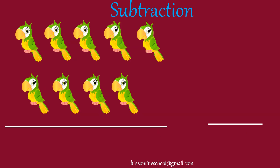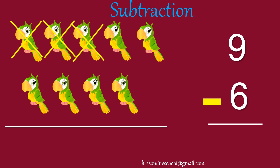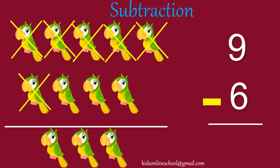And another example. 1, 2, 3, 4, 5, 6, 7, 8, 9. 9 parrots. Take away 6 parrots. Let's count: 1, 2, 3, 4, 5, 6. How many parrots left? 3. 9 minus 6 is 3.